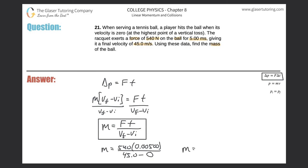So guess what? All we got to do is plug it in. Not bad. Just plug it on in. So 540 times 0.005 divided by 45. And we get a value of 0.06. And that's going to be in terms of kilograms. So that's the mass of the ball. Easy peasy.